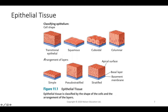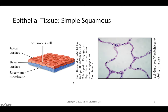Pseudostratified columnar cells look organized but can be tricky — not all cells reach the top, and the nuclei appear at different levels, making it look like multiple layers. However, there is actually only one layer. Pseudo means false — it appears stratified but is not.